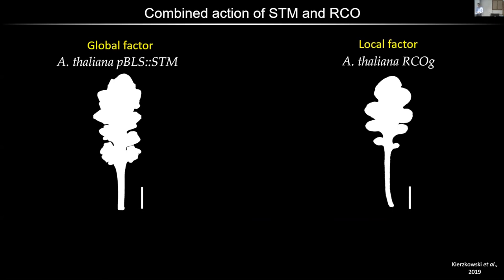Question about heteroblasty: serrations are heteroblastic traits associated with developmental stage changes — is there a similar heteroblastic series in Cardamina? Yes. The first leaf of Cardamina is simple — it expresses RCO but it does nothing, probably because of the different growth dynamics of leaf number one. In Cardamina, the first leaf has just a terminal leaflet; over time, more pairs of lateral leaflets appear; then cauline leaves appear with different, compressed, smaller compound forms.